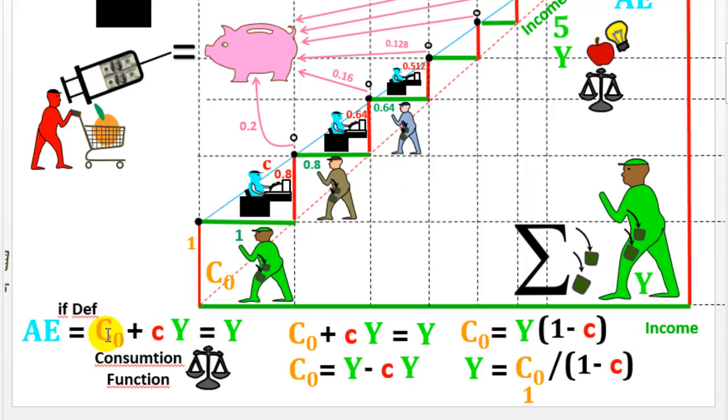Then, out of this expression, if we isolate first C0, and then we isolate Y, out of this equilibrium we can infer that Y is 1 divided by 1 minus C, which is this.